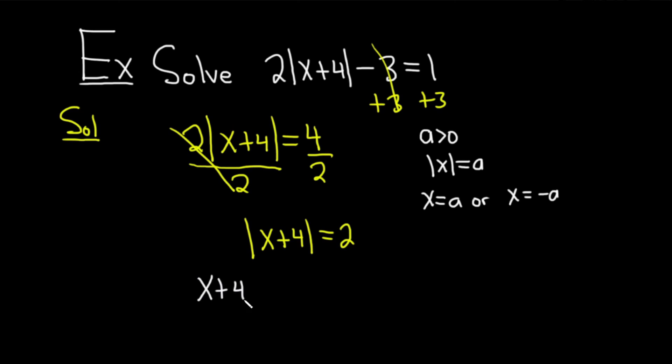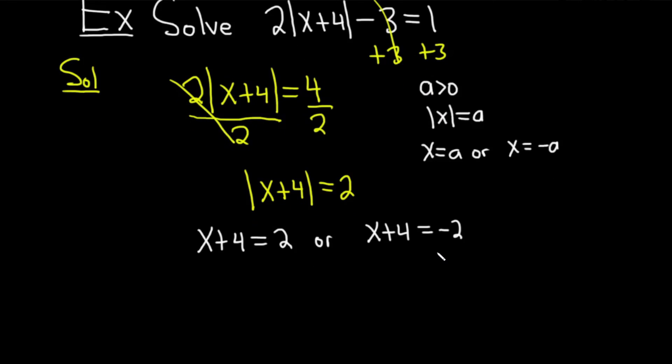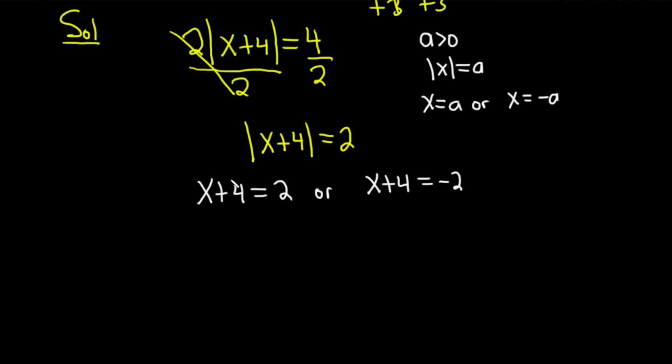We get x plus 4 equals 2 or x plus 4 equals negative 2. You can also put a plus or minus to condense things. But I think it's usually better to not because a lot of times there's a lot of math still to do after you drop the absolute value. In this case, there wasn't too much, so it would have been an option. But in many cases, it's not. We can solve this by subtracting 4 from both sides. We get x equals negative 2. And over here, we can subtract 4 from both sides. And so we get x equals negative 6. And so we have the answers of negative 6 and negative 2.